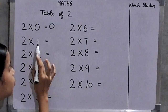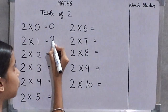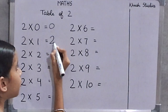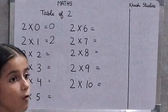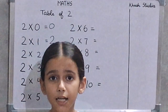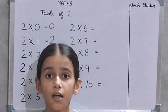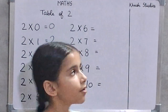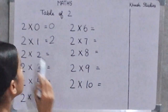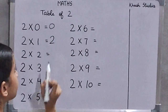2 ones are 2. When we multiply a number with 1, the answer is the number itself. So, 2 ones are 2.